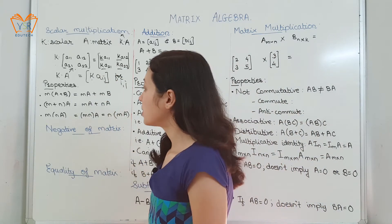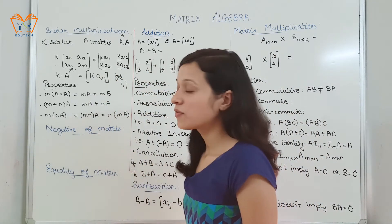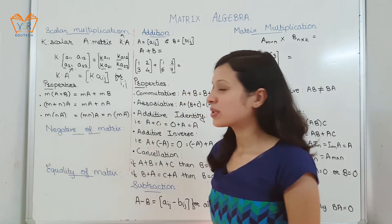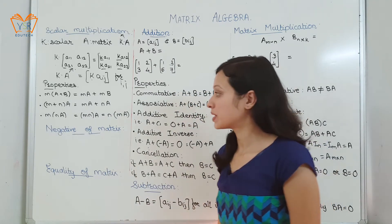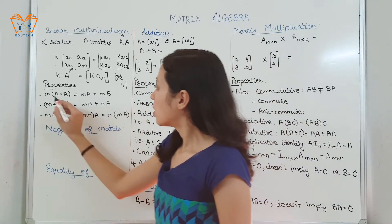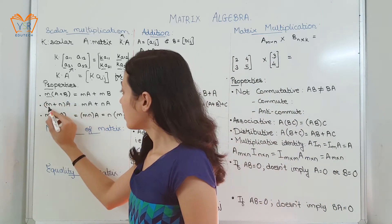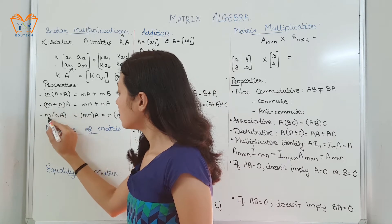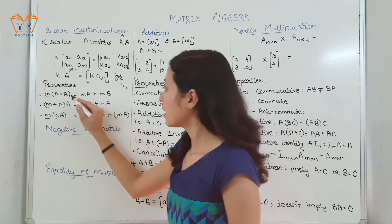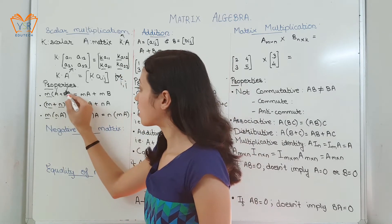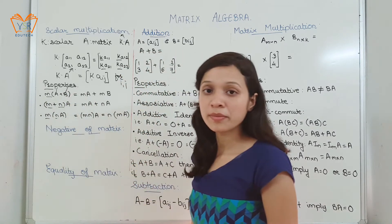The properties of scalar multiplication are self-explanatory. Here m and n are the scalar quantities, and a and b are the two matrices.